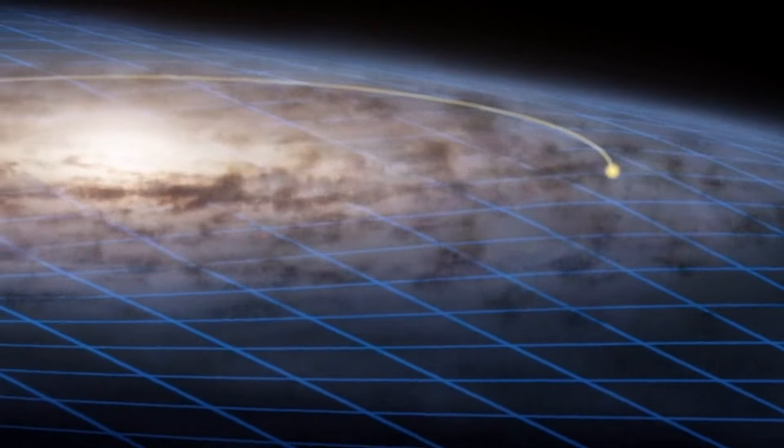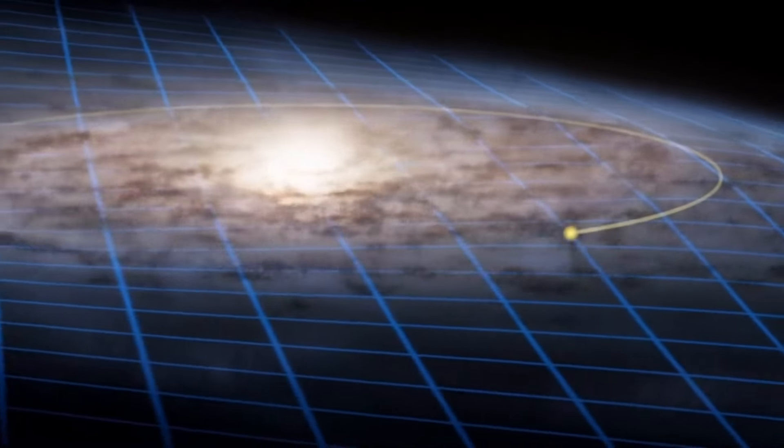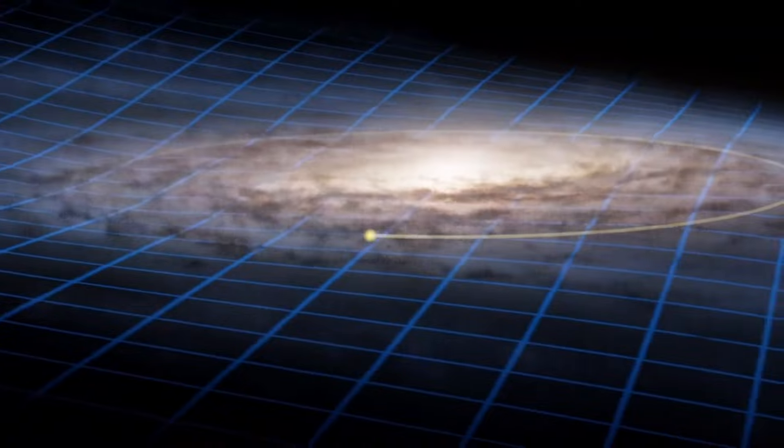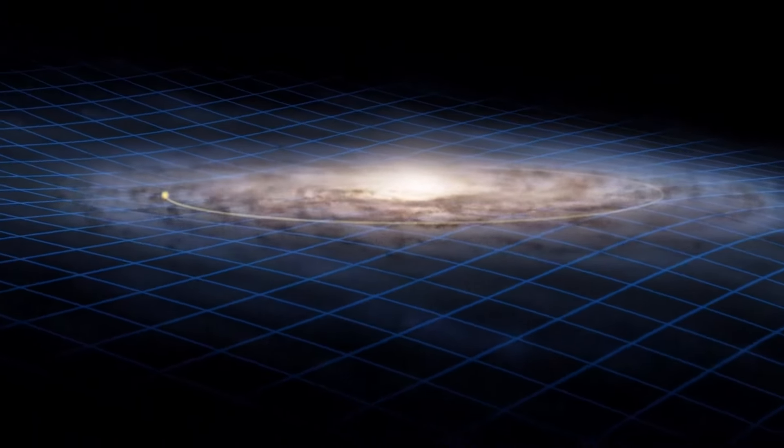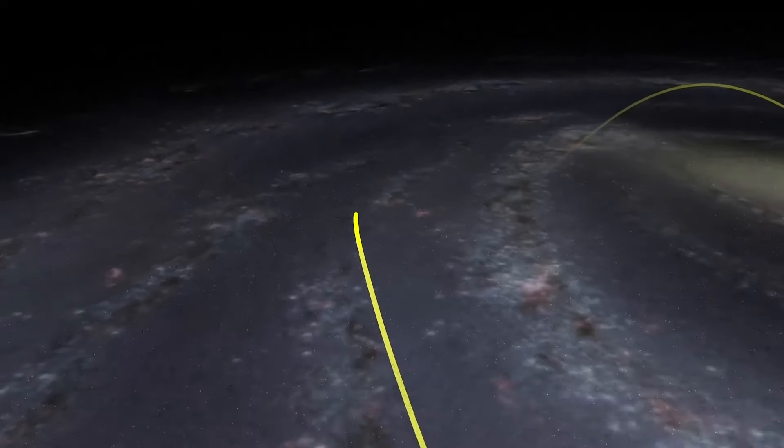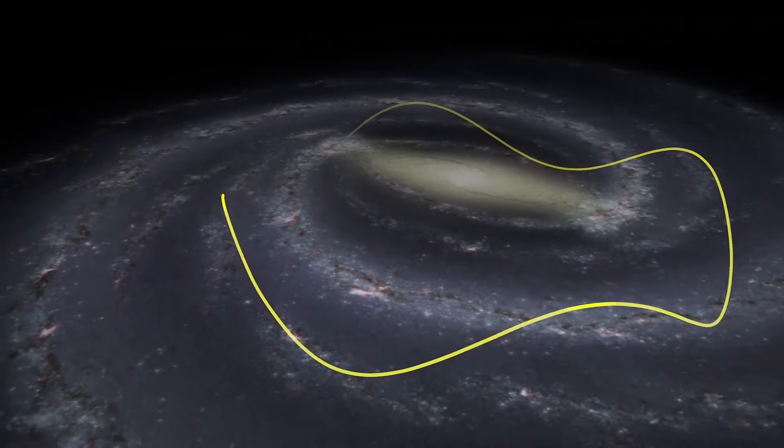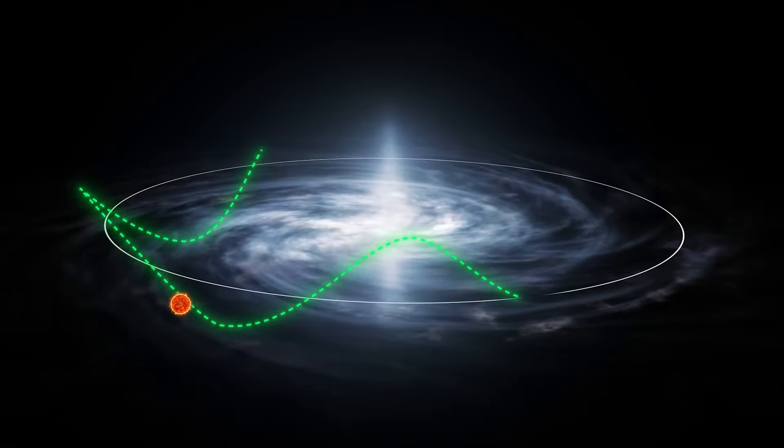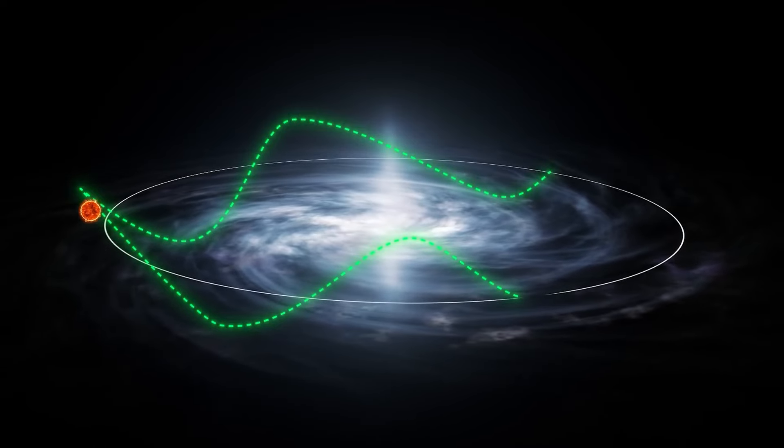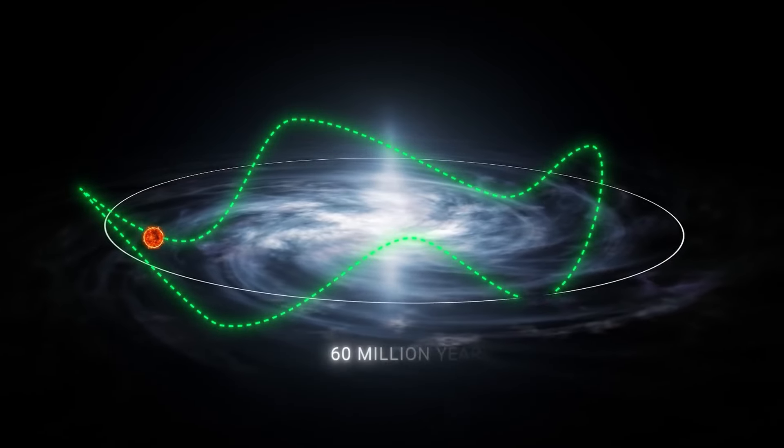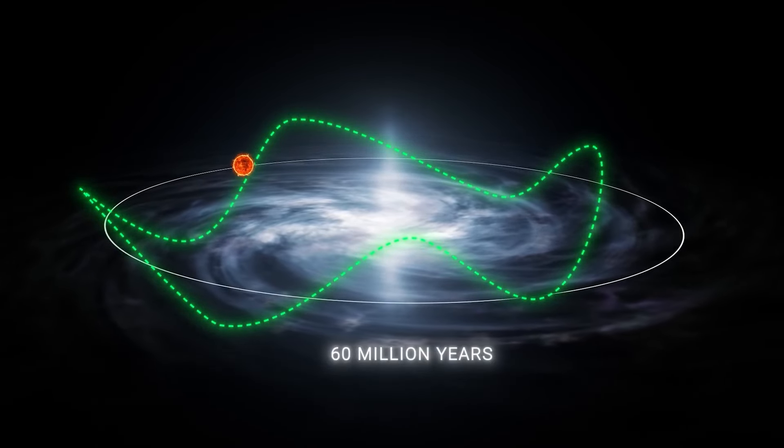It is also worth noting that the Sun doesn't appear to trace a flat circle in one plane only as it moves around the galaxy. The Sun actually appears to bob up and down dozens of light years through the midplane of the galaxy's disk. Right now, we are still on our way up. The cycle takes about 60 or so million years to complete once.